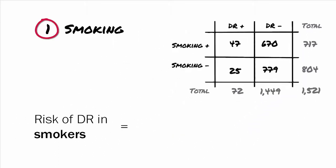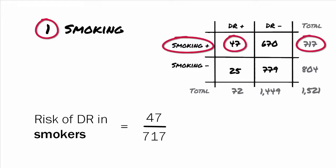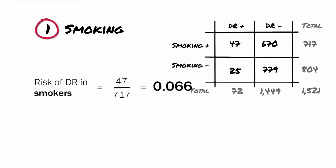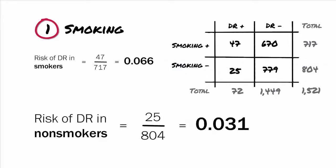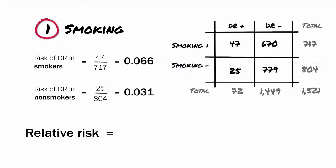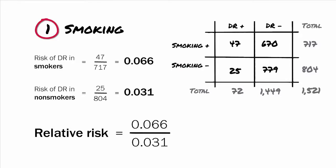To calculate the risk of DR in smokers, the exposed population, we divide 47, which is the number of smokers with DR, by 717, which is the total number of smokers. This equals 0.066. To calculate the risk of DR in non-smokers, the unexposed population, we divide 25, which is the number of non-smokers with DR, by 804, the total number of non-smokers. This equals 0.031. Now we can calculate the relative risk by dividing 0.066 by 0.031, which equals 2.1.